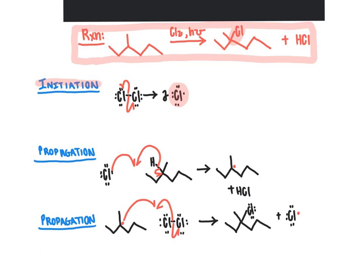That chlorine radical comes in and is very eager to react, creating the homolytic bond breakage of a carbon-hydrogen bond from our alkane — specifically the bond whose breakage leads to the most stable radical intermediate. We're creating the most stable possible intermediate by creating a tertiary carbon radical. Then in the next propagation step, that tertiary carbon radical uses one of its electrons to force the breakage of the chlorine-chlorine bond, enabling the creation of a carbon-chlorine bond in our final product.